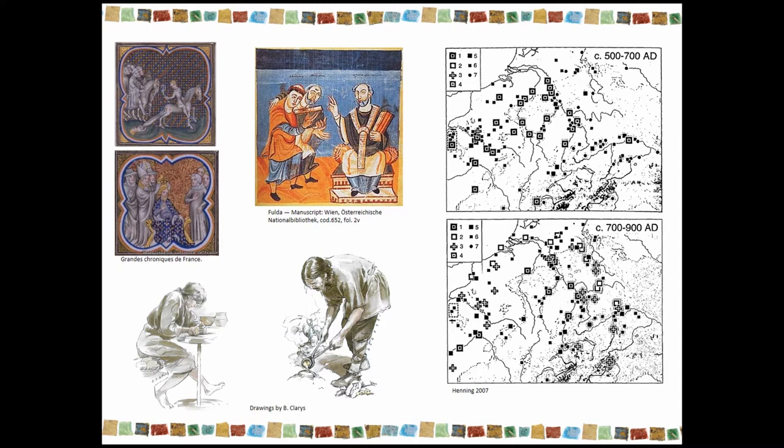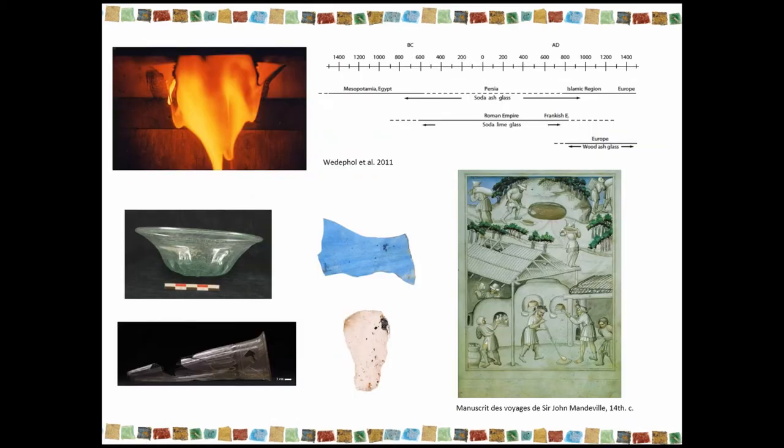What's also interesting to notice is that the movement of craft production from the previous agglomeration to the rural land goes along with technical changes in this craft. And one of the most emblematic is certainly the one that glass production went through with this change of fluxing agent from soda to potash glass.